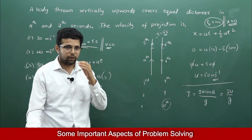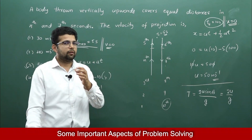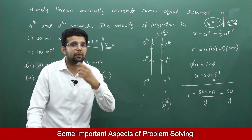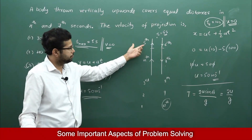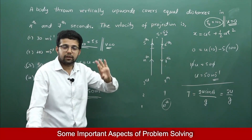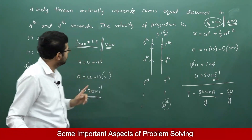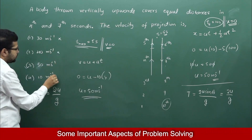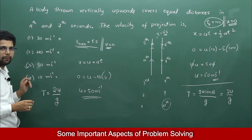Acceleration due to gravity subtracts velocity by 10 m/s every second. If the object is still going up in the 4th second, initial velocity must be greater than 40 m/s, because it is also moving in the 5th second. So I can eliminate 40 m/s and 10 m/s, and go for 50 metres per second.